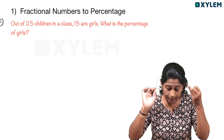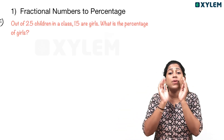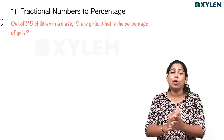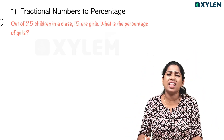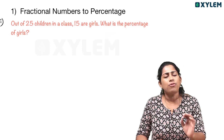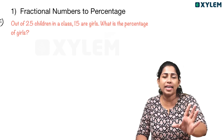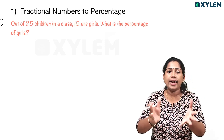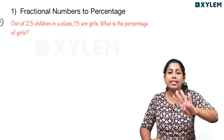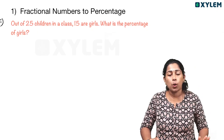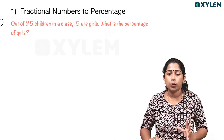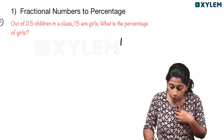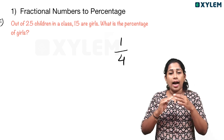That's the fraction numbers to percentage. How do we convert fractions to percentage? What is a fraction? A fraction is part of a whole — that's it. If you have a cake in front, you will cut 4 pieces. You will take one piece. Then you have one part out of 4. Okay, that's it.